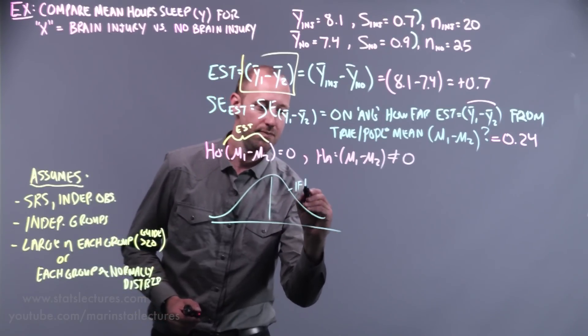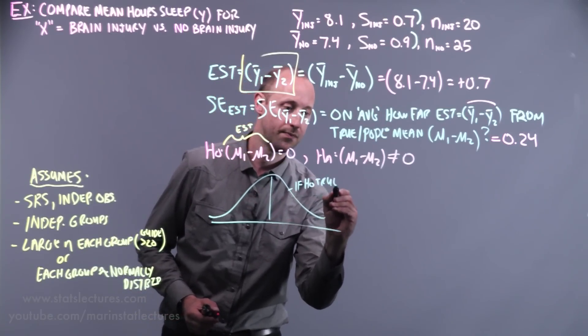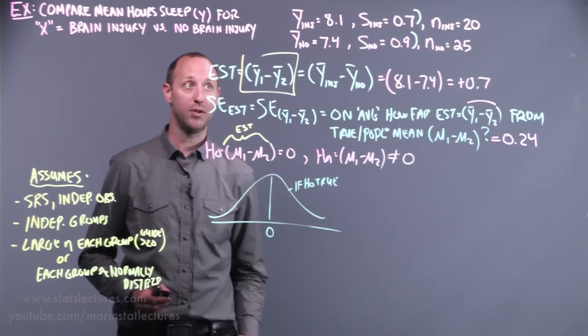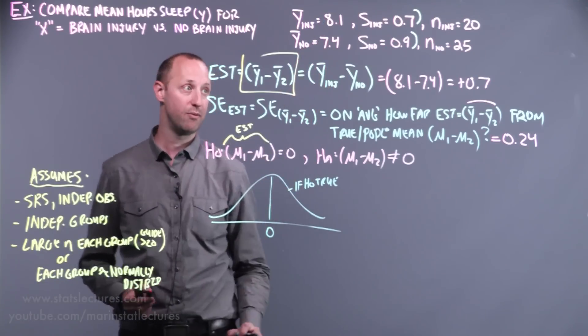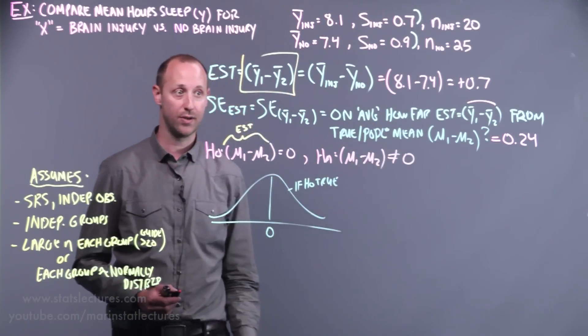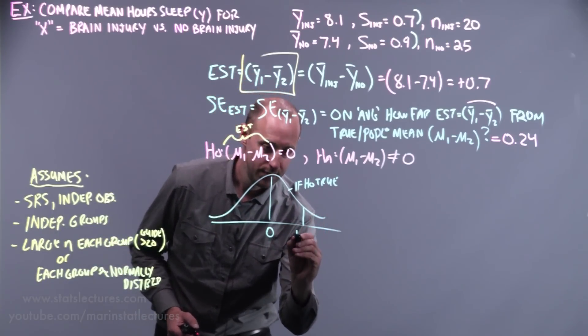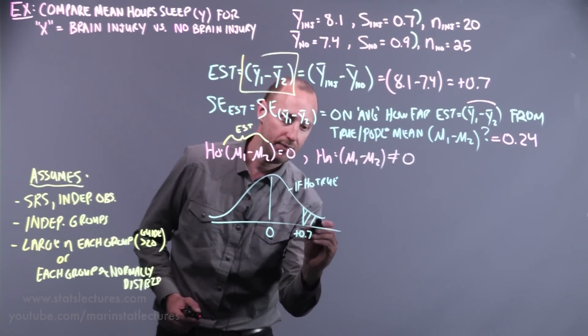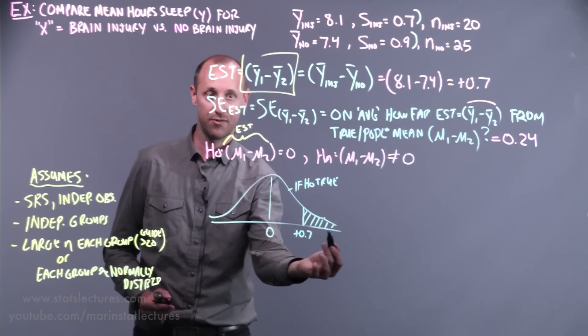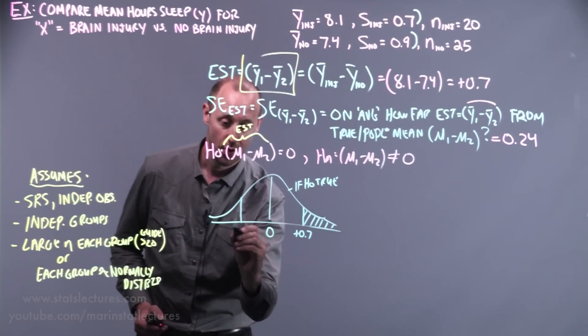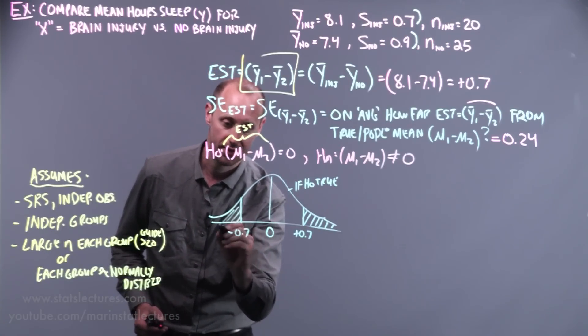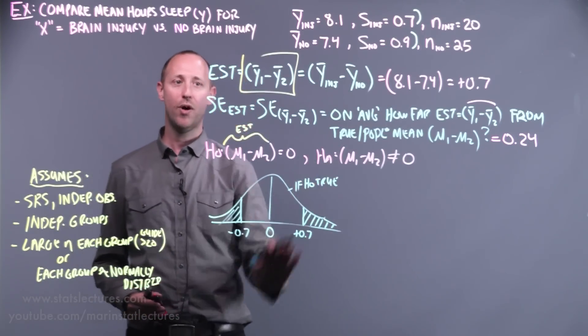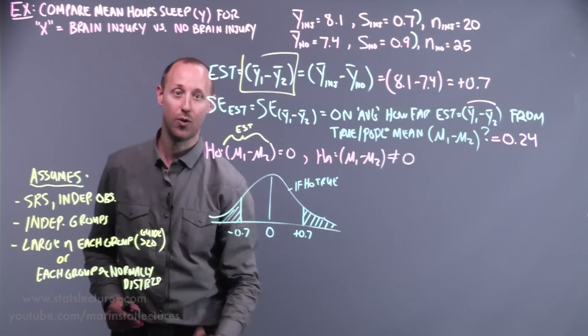If our null hypothesis is true, we expect the difference we get in a sample to be zero. We expect these two sample means to be roughly equal or their difference to be zero. What we saw was a difference of 0.7. How often will we get the difference of positive 0.7 or negative 0.7? We're doing the two-sided test. If we wanted to do a one-sided test, we'd just look at the one-tail.